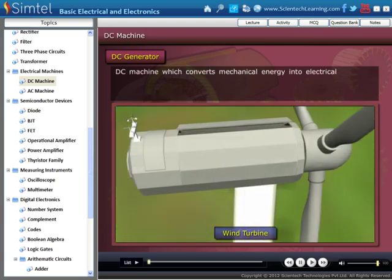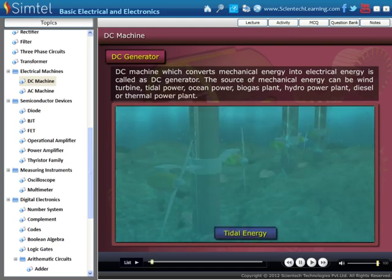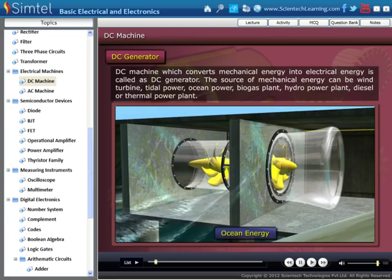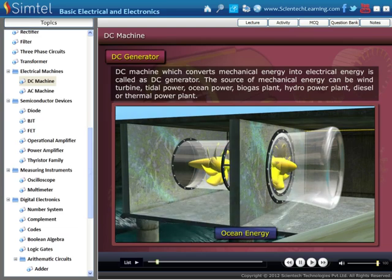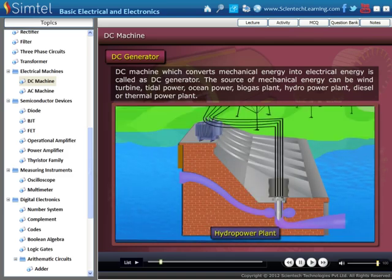Here we study DC generator. DC machine which converts mechanical energy into electrical energy is called DC generator. The source of mechanical energy can be wind turbine, tidal power, ocean power, biogas plant, hydro power plant, diesel or thermal power plant, etc.